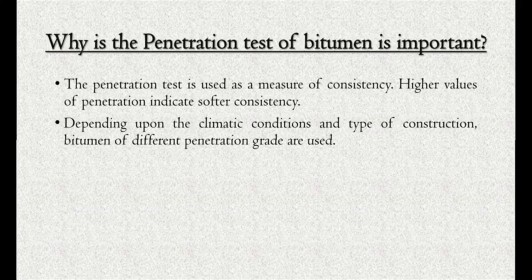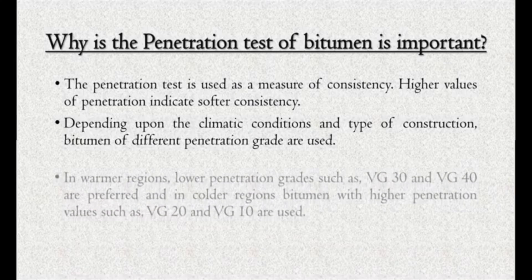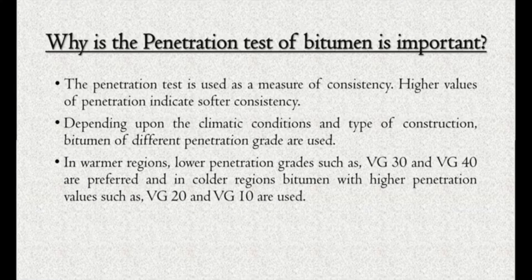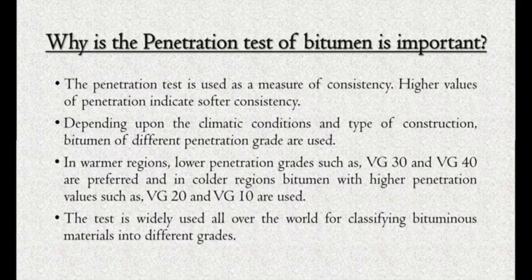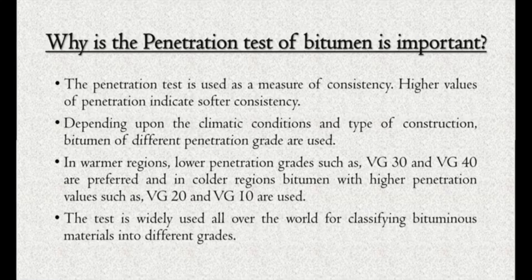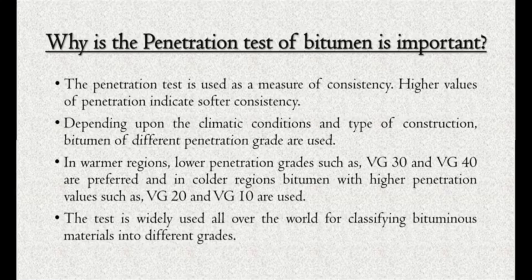Depending upon the climate conditions and type of construction, bitumen of different penetration grades are used. In warmer regions, lower penetration grades such as VG30 and VG40 are preferred, and in colder regions bitumen with higher penetration values such as VG20 and VG10 are used. The test is widely used all over the world for classifying bituminous material in different grades.